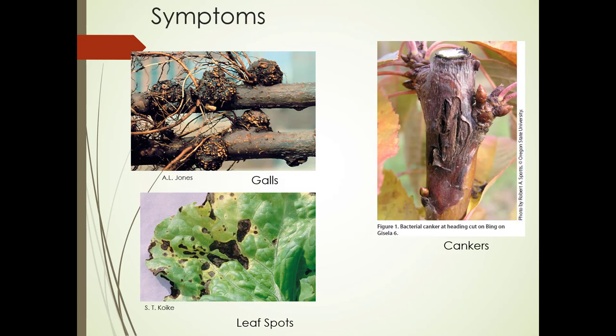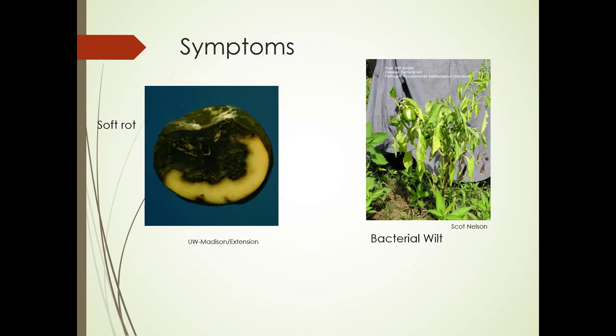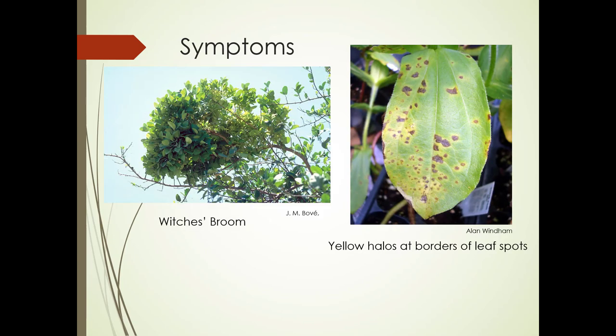We've got crown gall on the upper left on apple rootstock, a bacterial leaf spot on lettuce, and bacterial canker on Bing cherries. Symptoms include soft rot — that's actually the name of the disease — and you'll know it's bacterial because it has a horrible odor. On the right, a bell pepper with bacterial wilt, also seen on potatoes and tomatoes. Sometimes you'll see a witch's broom appearance on trees with bacterial disease. Xanthomonas on zinnia can show yellow halos, angular spots along the veins.